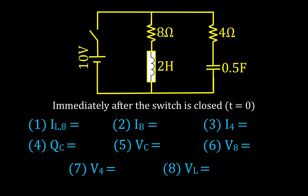We have two resistors, an 8 and a 4. Inductors resist changes in current, and capacitors resist changes in voltage. So immediately after the switch has been closed, this inductor starts to resist changes in current. It produces a back EMF, a self-induced voltage, and the greatest self-induced voltage is across that inductor. The current through this branch — through the 8Ω resistor and the inductor — is zero.